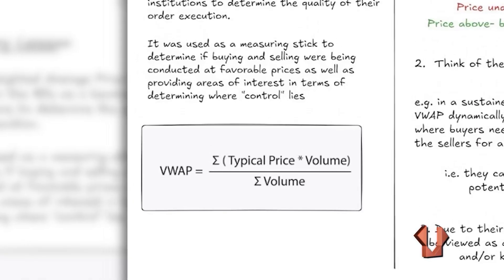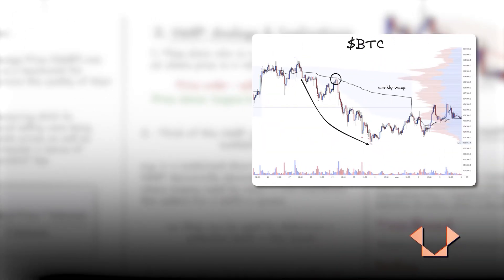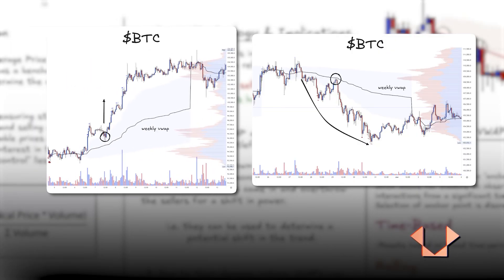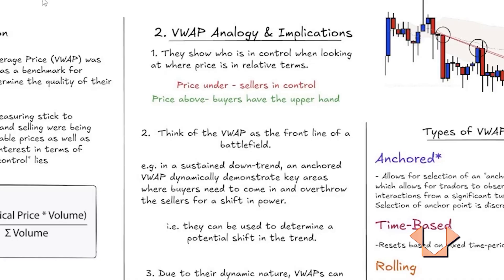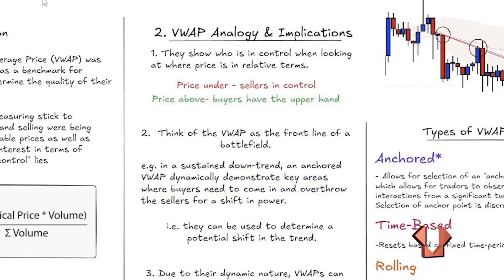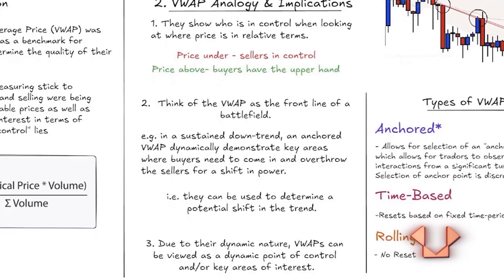A simple analogy: prices under the VWAP means sellers are in control; prices above means buyers have the upper hand. You can think of it as the front line of a battlefield or a line in the sand. In a sustained downtrend, an anchored VWAP placed on a major pivot will sometimes act as a general area of resistance, and once that resistance is flipped, the trend begins to gain momentum and flip in the other direction.